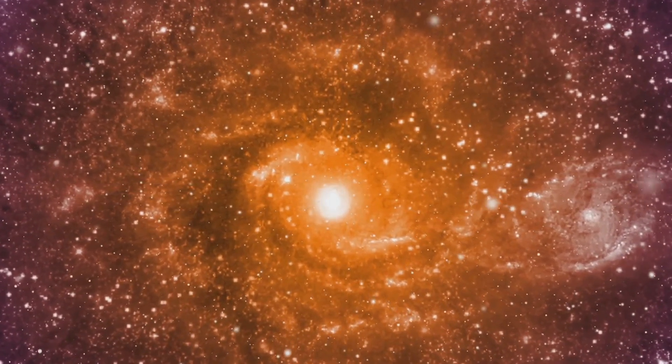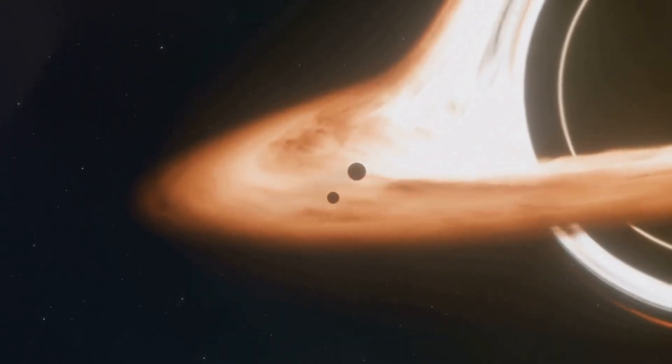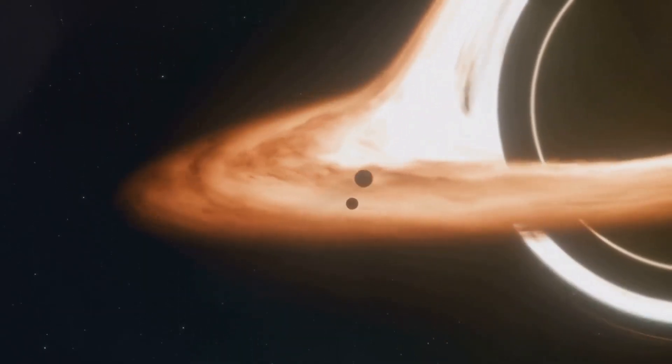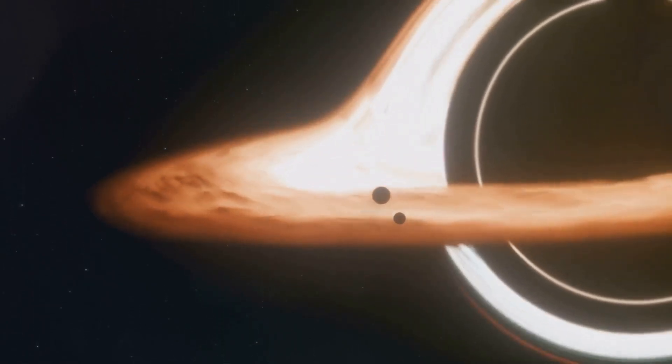IC 1101's supermassive black hole, a galactic Titan. The largest ever discovered next up is the supermassive black hole at the center of IC 1101. Giant elliptical galaxy IC 1101 sits about 1.04 billion light years distant from us, and its central black hole is equally monstrous: 40 billion solar masses.